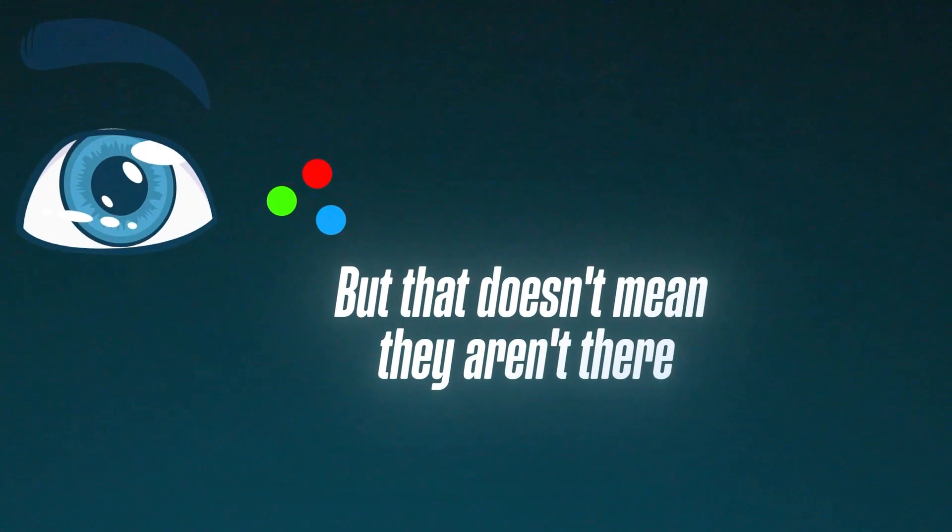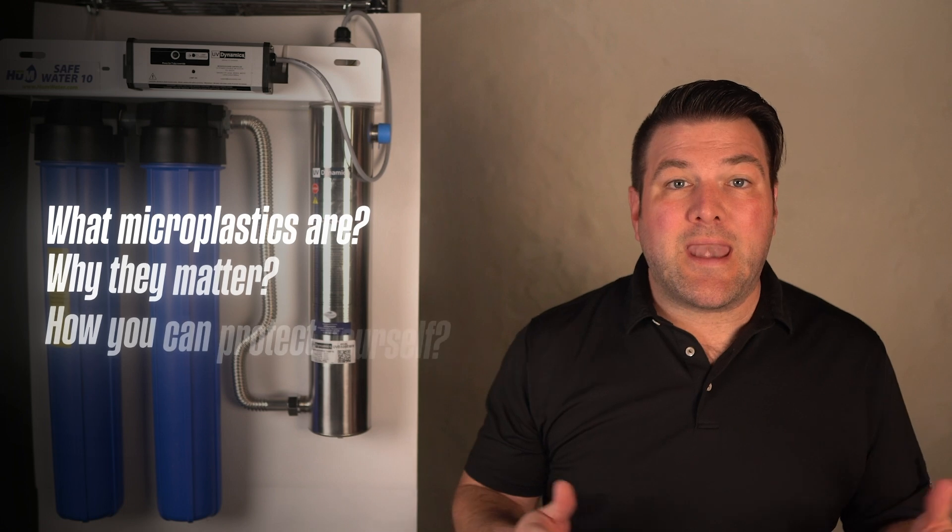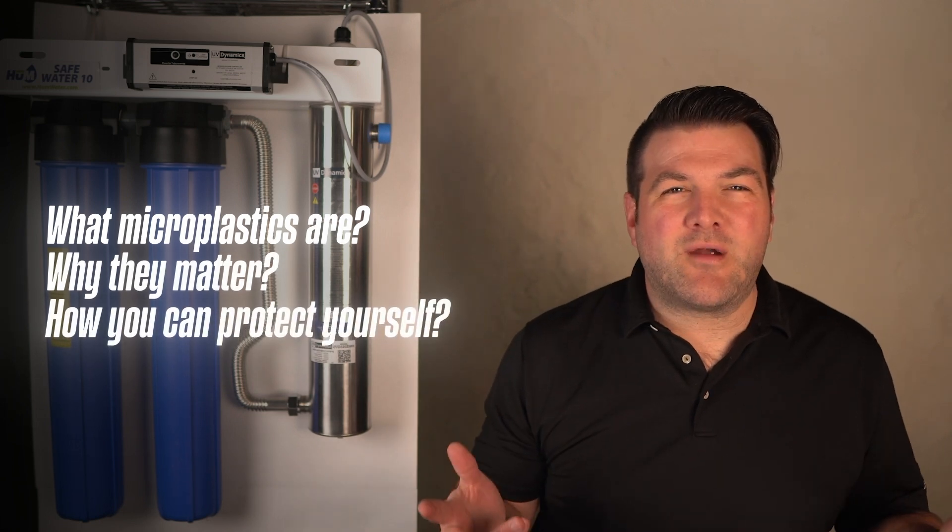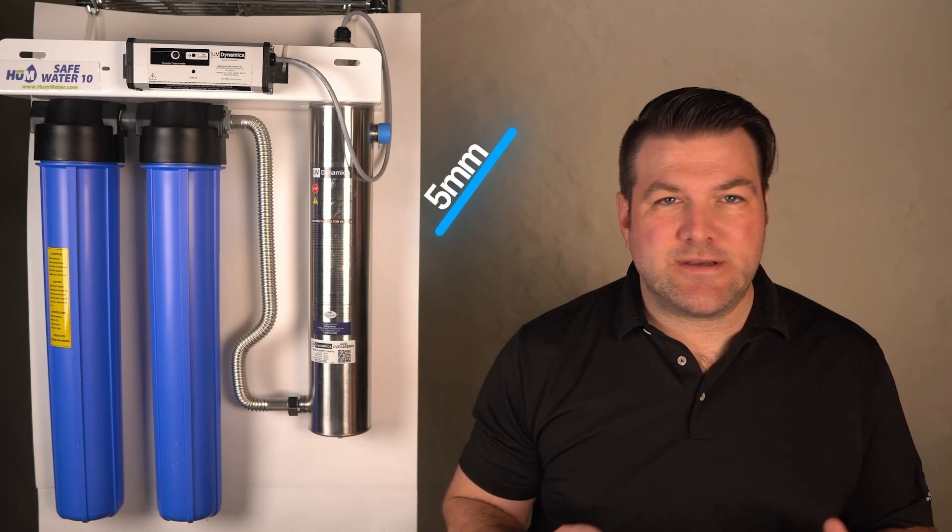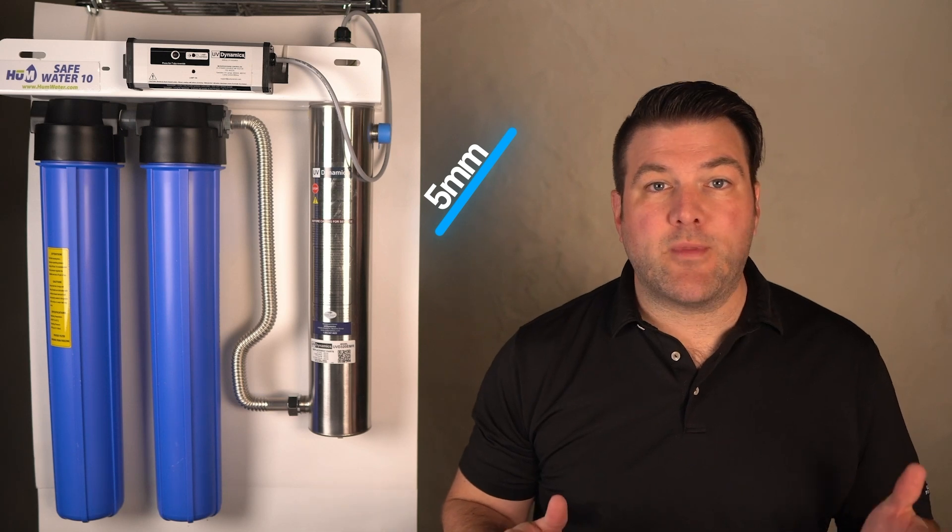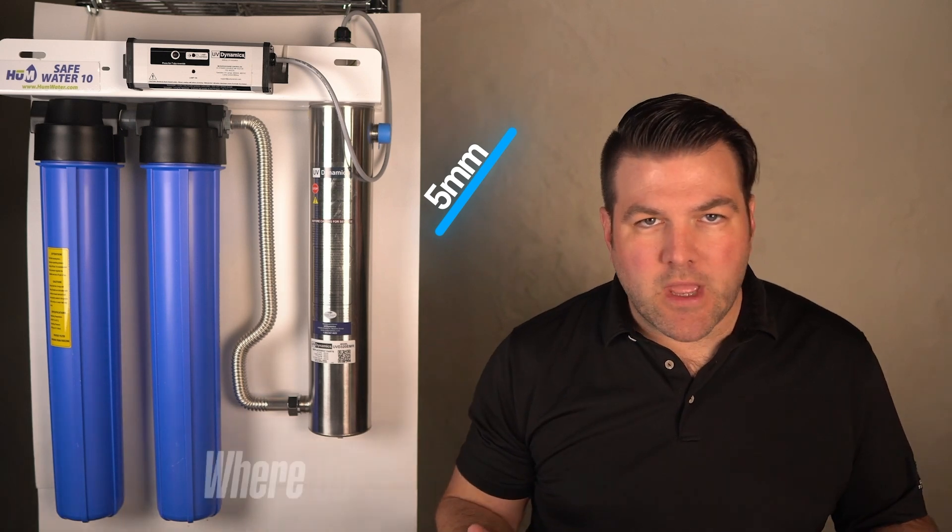but that doesn't mean they aren't there. In this video, we'll break down what microplastics are, why they matter, and how you can protect yourself. What exactly are microplastics? Microplastics are tiny plastic particles, typically smaller than 5 millimeters, that are either intentionally manufactured at that size or result from the breakdown of larger plastics over time.